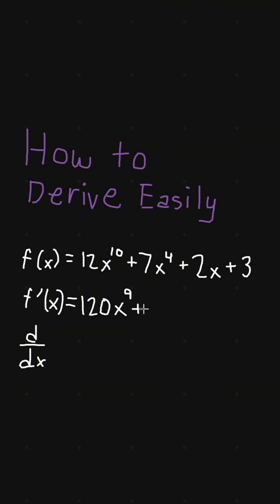Plus, 4 times 7 is 28, x to the power of 3. Plus we have 2x, and x to the power of 1 is x, so that satisfies.